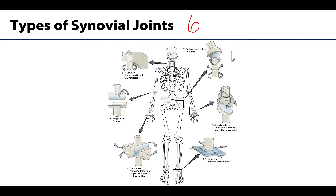Let's start with the ball and socket joint. These joints consist of a ball-like surface, often called a head, fitting into a socket or cup-like surface. This type of joint is capable of all the movements possible at a synovial joint: flexion and extension, abduction and adduction — which means it can also circumduct — as well as medial and lateral rotation. It is the most freely movable of the synovial joints.